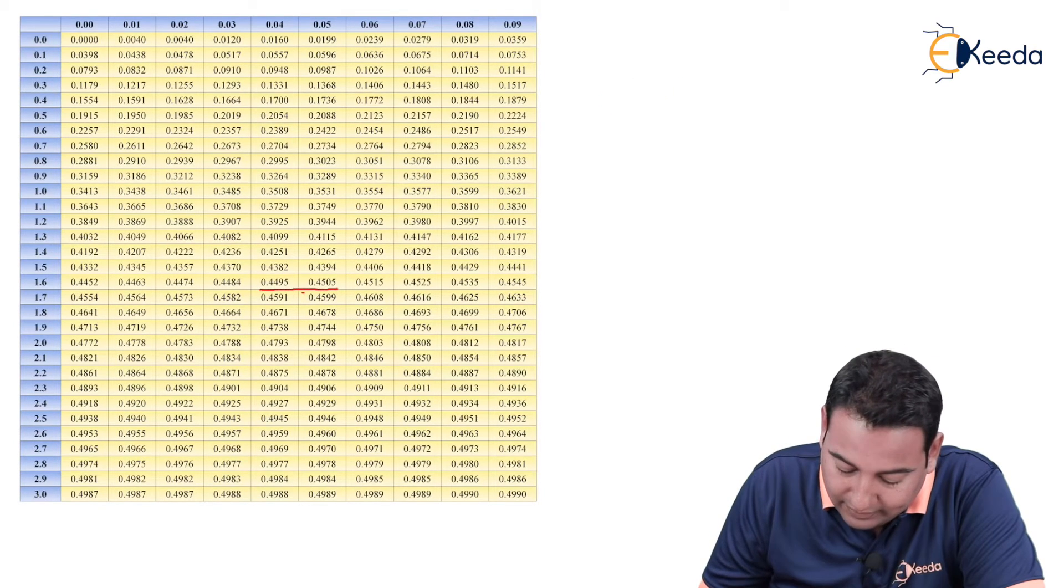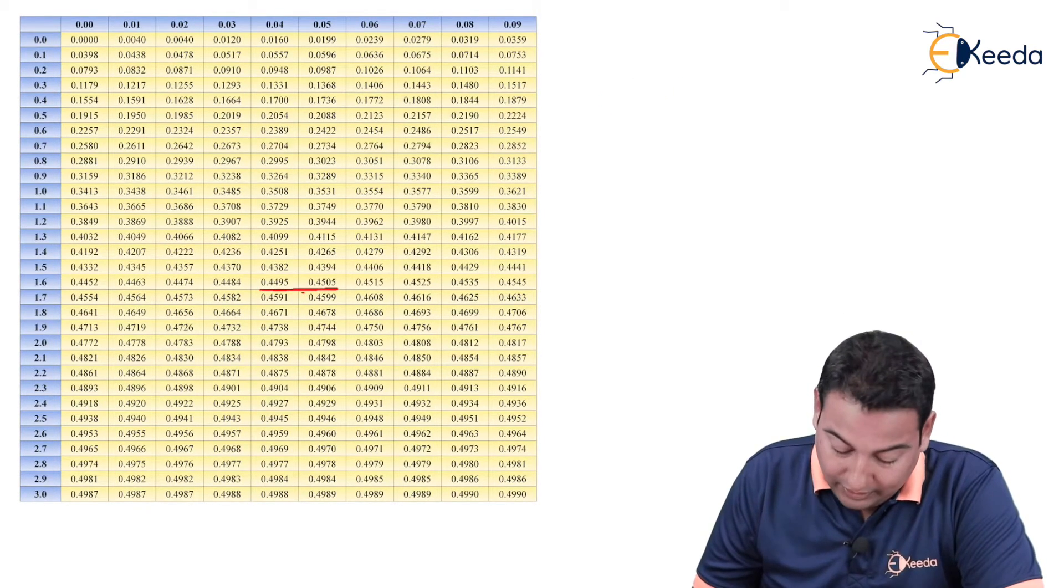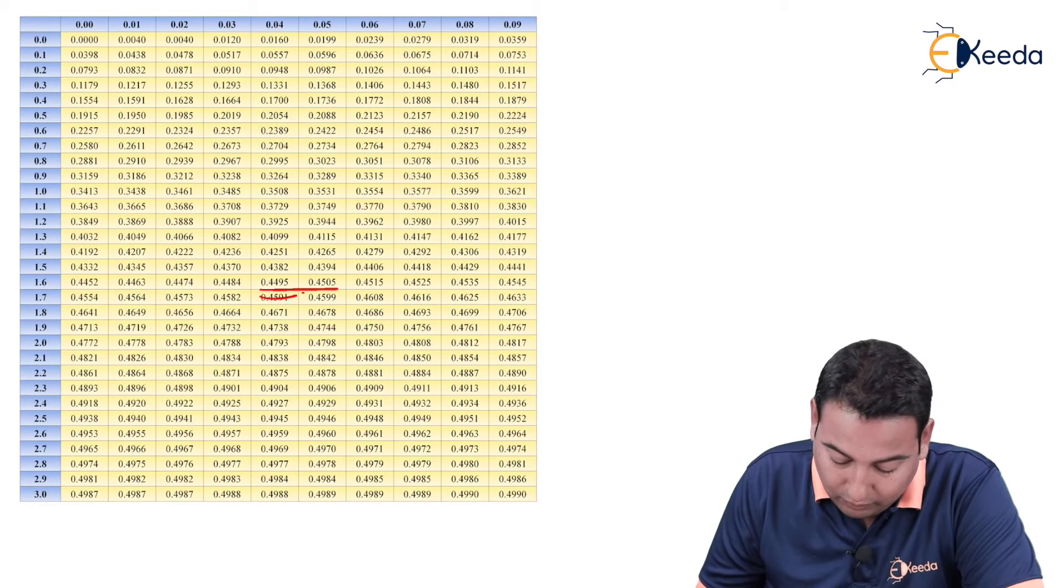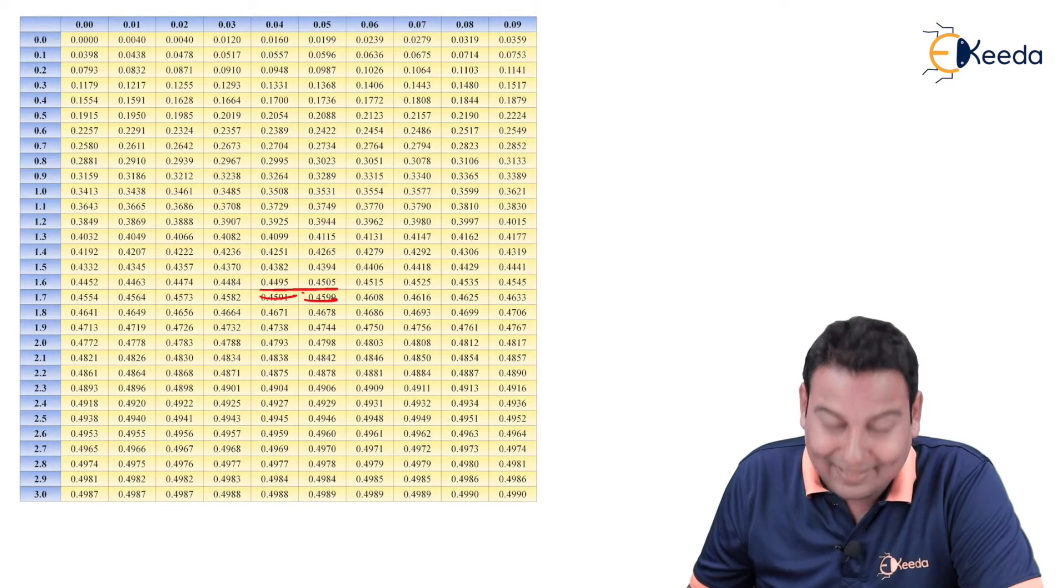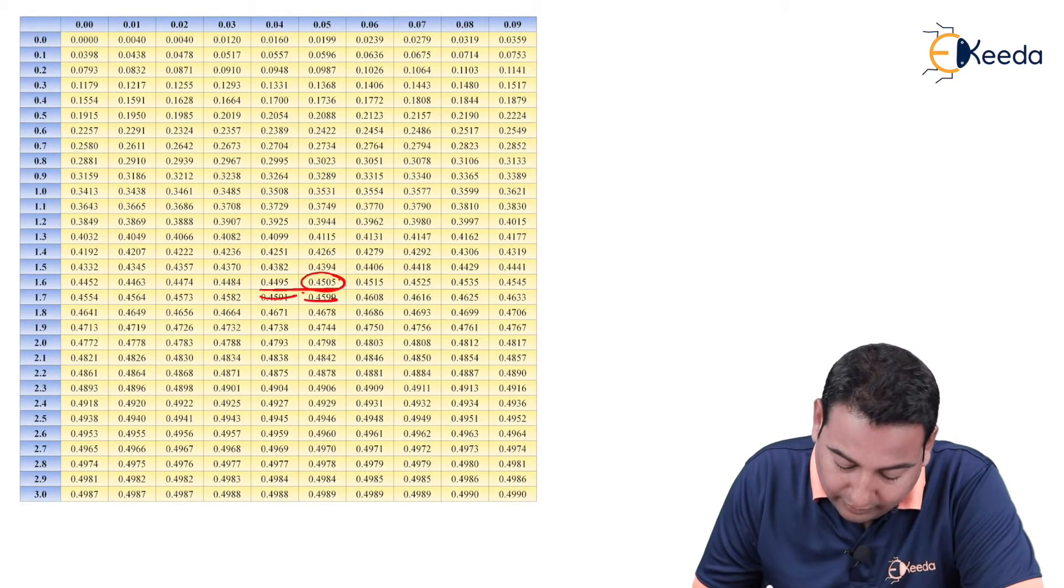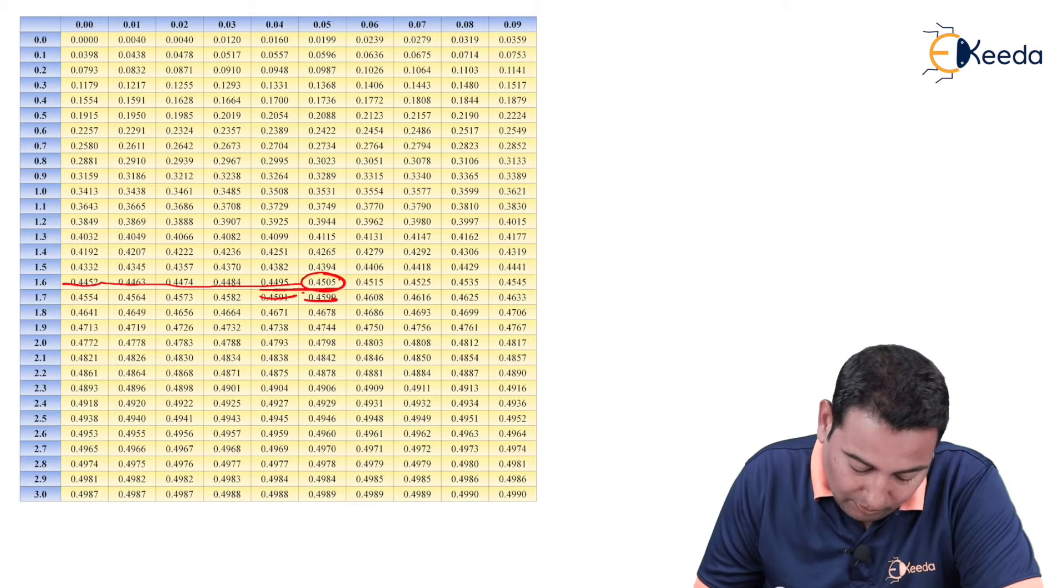In Z table we will go and we will check what is the value of Z at 0.45. See here, 0.45 is in between these two values. Either you can select the first one or you can select the second one because we do have 0.45 exactly in between. Let's select this.